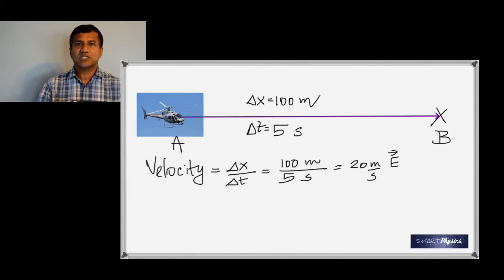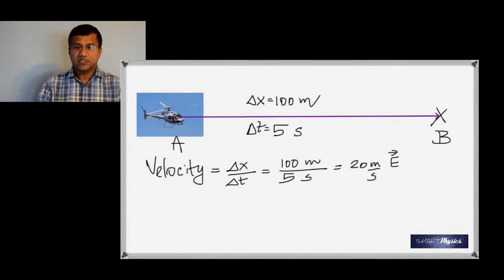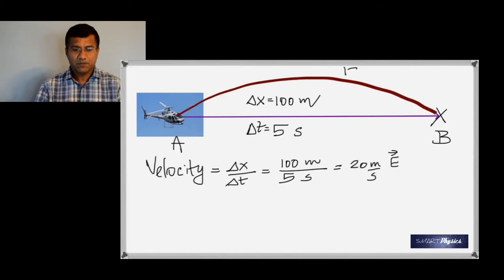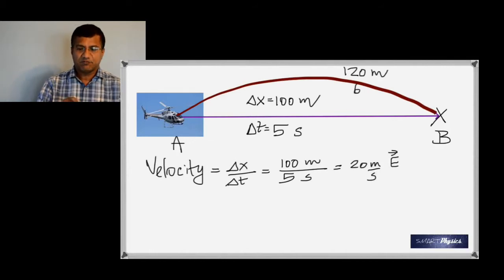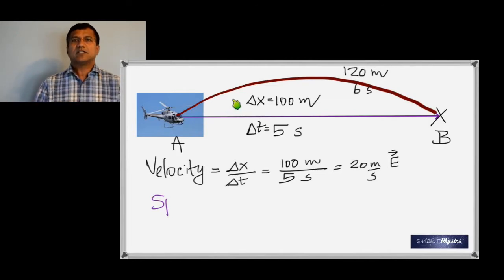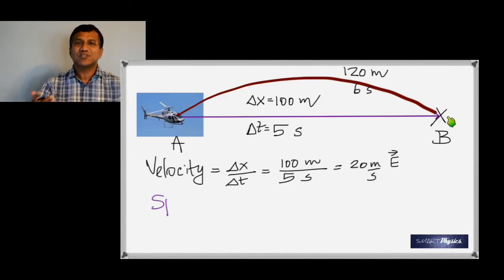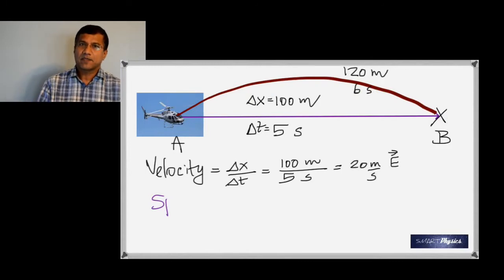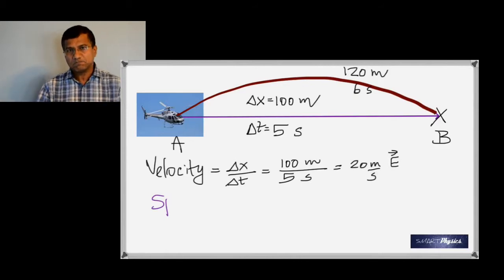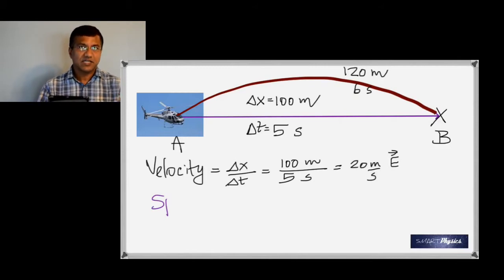Now suppose the helicopter flies not in a straight line but takes a curved path. In that case the distance is going to be greater than 100 meters — let's say it's 120 meters — and it takes six seconds. What would the velocity be in this case?